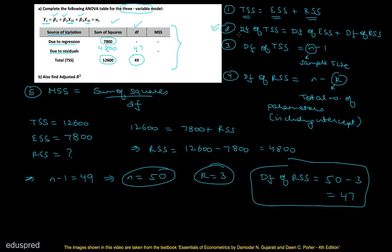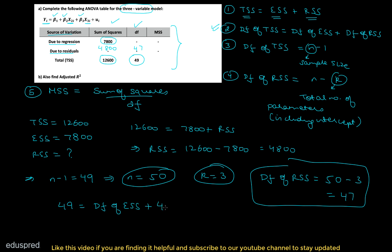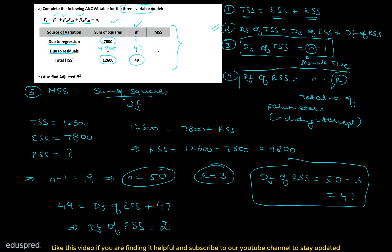Using rule two, degrees of freedom of TSS (49) equals degrees of freedom of ESS plus degrees of freedom of RSS (47), so degrees of freedom of ESS equals 2. Note that the degrees of freedom of TSS is always n minus 1 and does not depend on the number of parameters or independent variables. On the other hand, degrees of freedom of RSS does depend on the number of parameters in the model, so it changes with different model specifications.